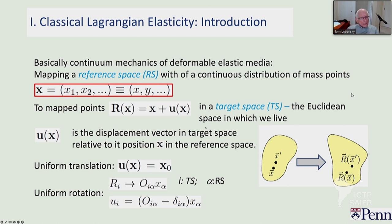The mapping between the two spaces is defined by the equation R of X equals X plus U of X. Uniform translations are described by U of X simply being some constant X-naught that has moved X relative to its original position. In the target space we can have Euclidean invariances, which include uniform rotations and uniform translations. I've written the rotation matrix with subscript I — that's the subscript for the target space — and Greek letters for the reference space. U sub I can have this kind of behavior, which is basically a rotation minus the original state.